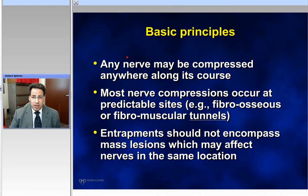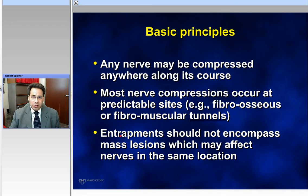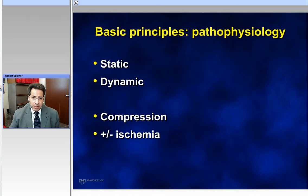Any nerve can be compressed anywhere along its course. Most nerve compressions occur, though, at predictable sites, namely fibroosseous or fibromuscular tunnels — in other words, tunnel syndromes. In a true sense, entrapments really shouldn't encompass mass lesions because mass lesions could occur anywhere. For example, a buttock-level tumor causing sciatic nerve symptoms really isn't piriformis syndrome.